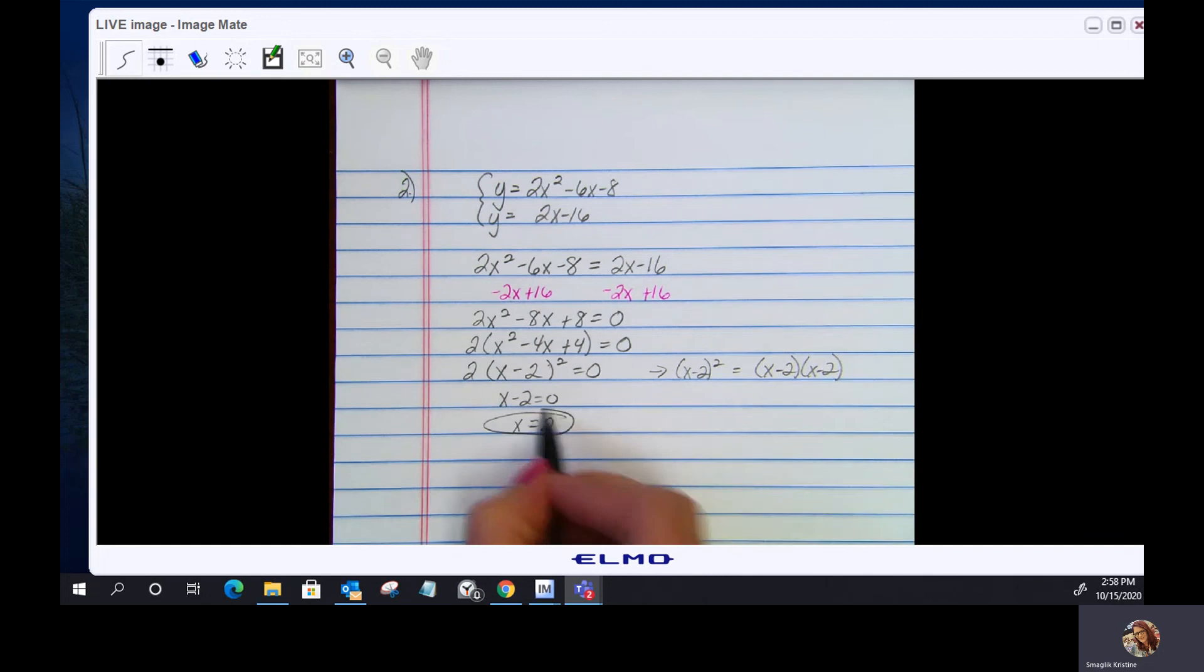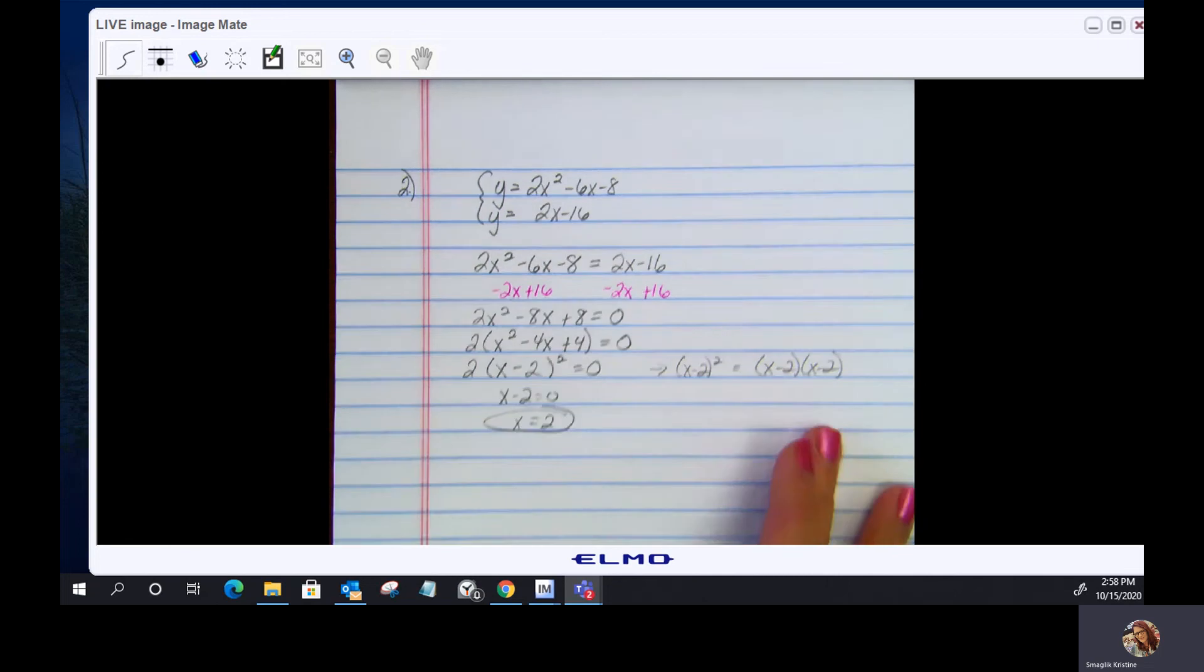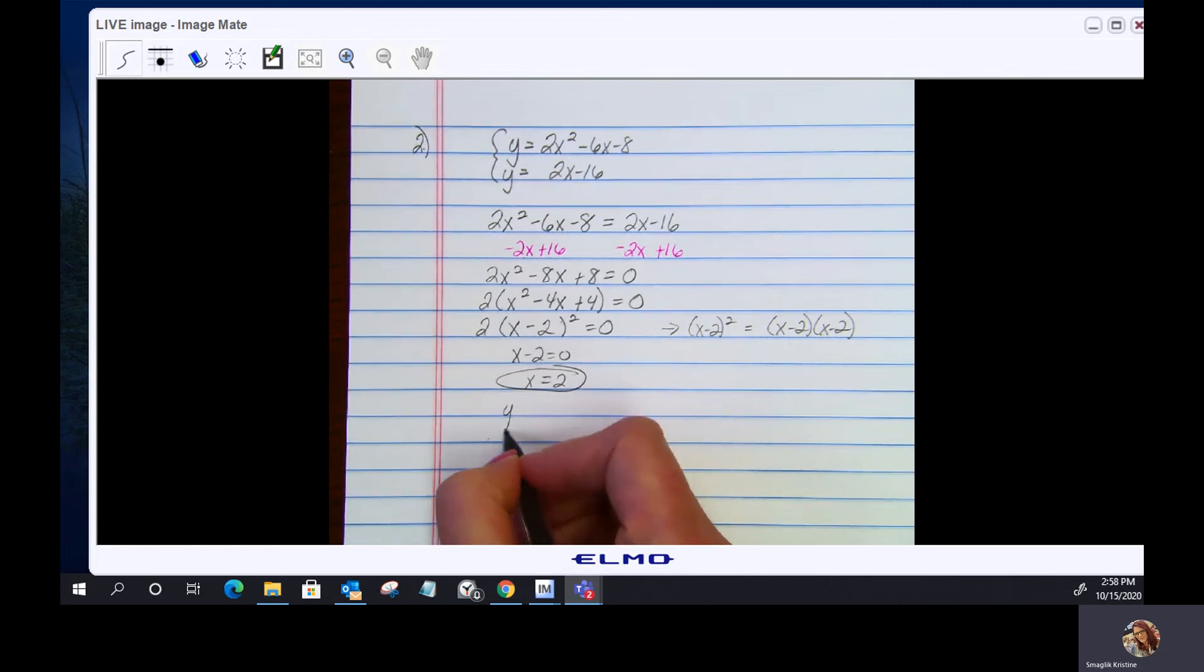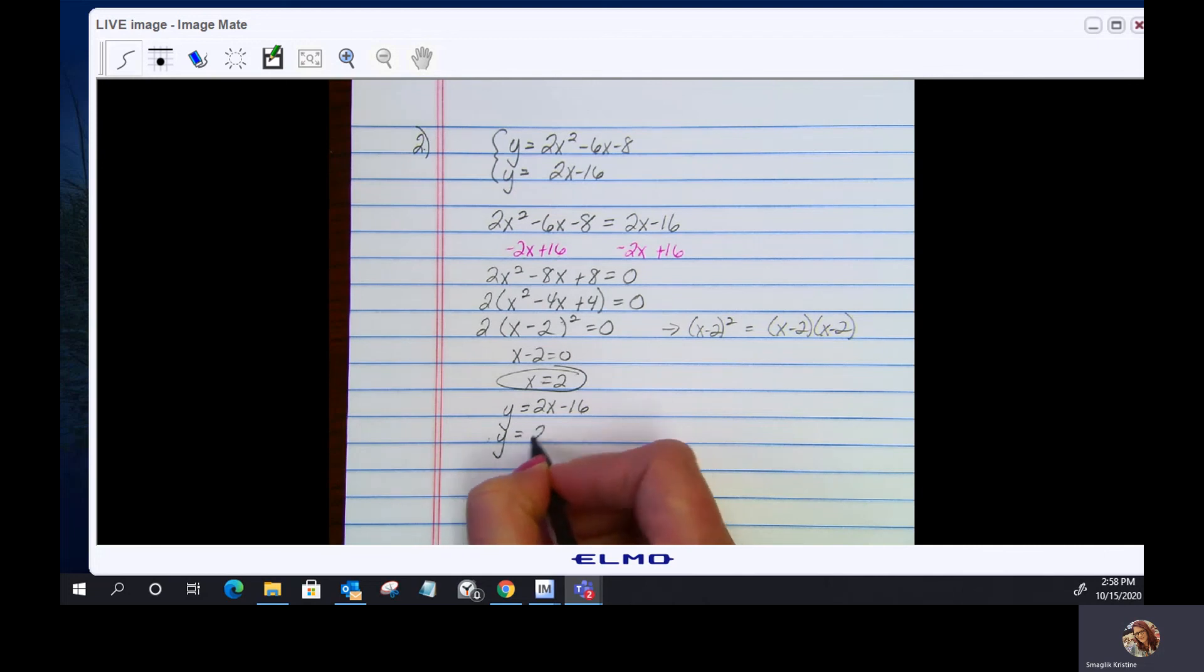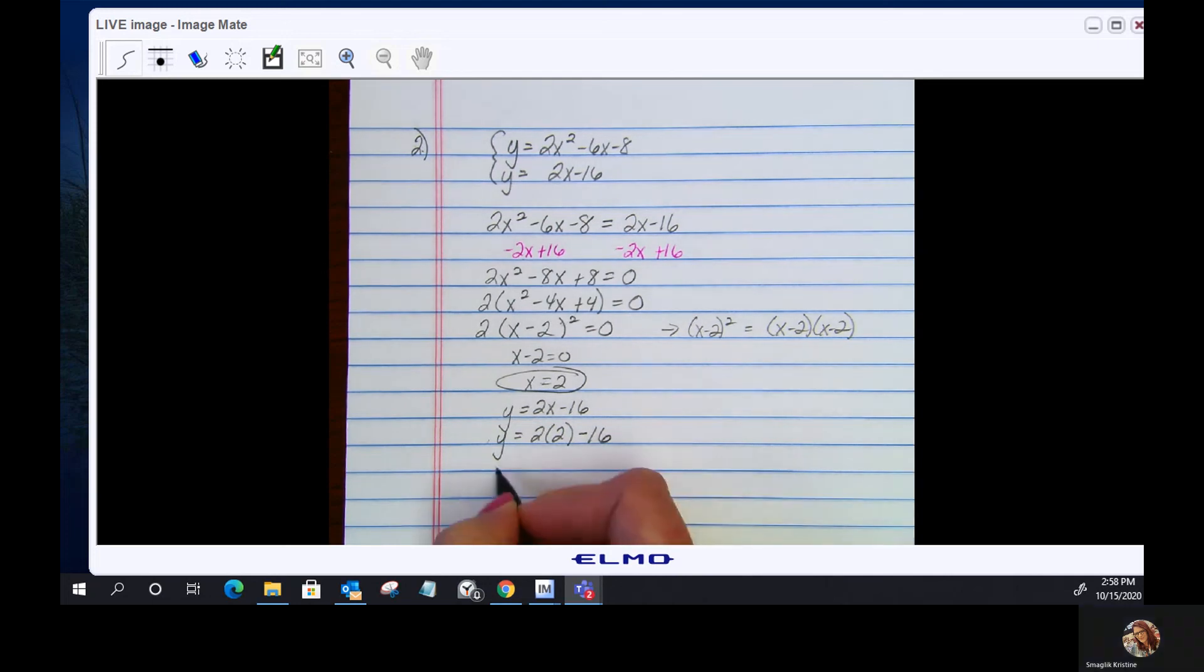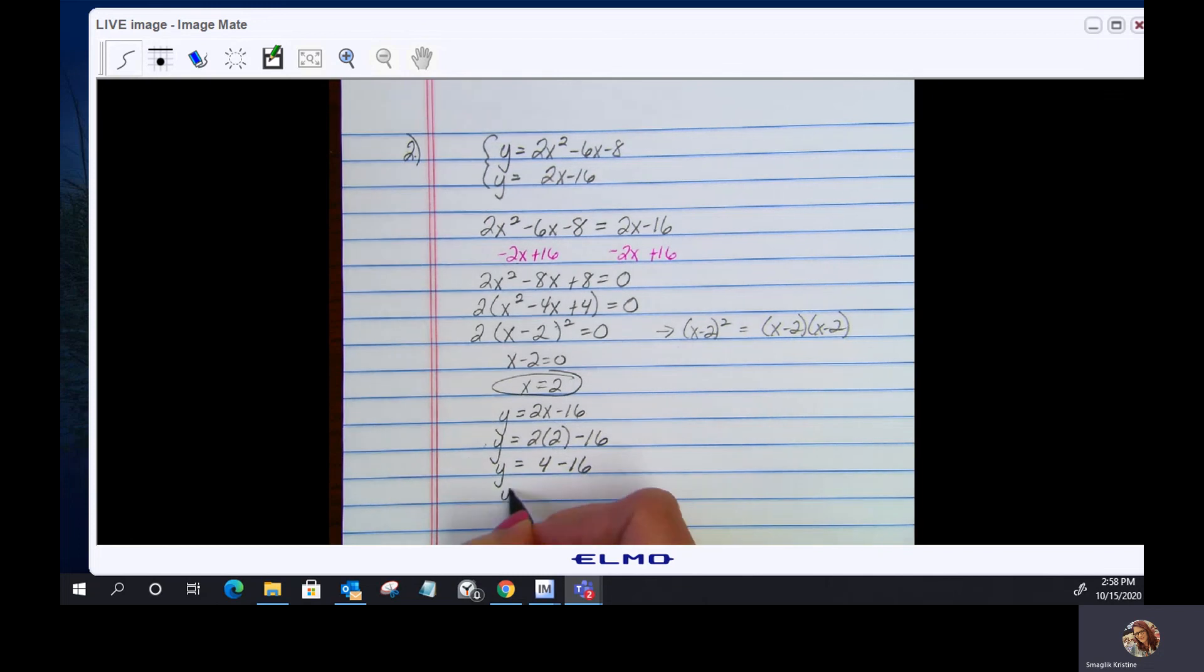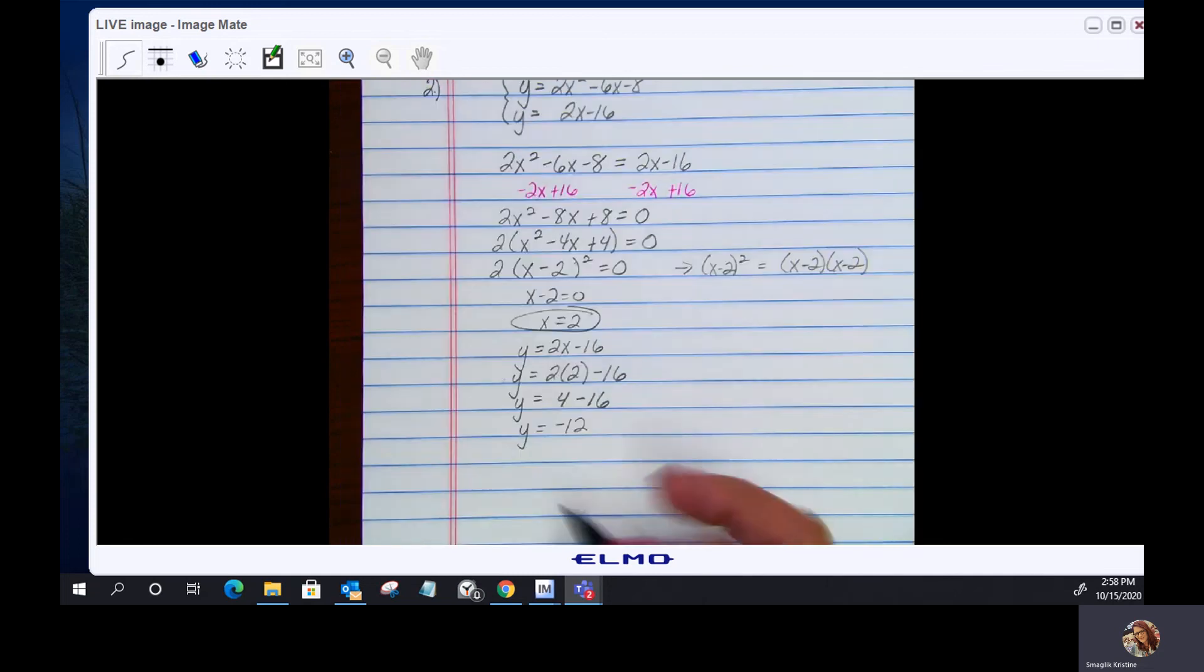This just means this system only has one solution. So now let's go back and find the corresponding y. I'm going to grab, again, I'm going to go for the linear function. So I'm going for y equals 2x minus 16. y equals 2. I'm going to substitute that 2 in, times 2 minus 16. y equals 4 minus 16. 4 minus 16, that's going to be a negative 12. So my solution is 2, negative 12.